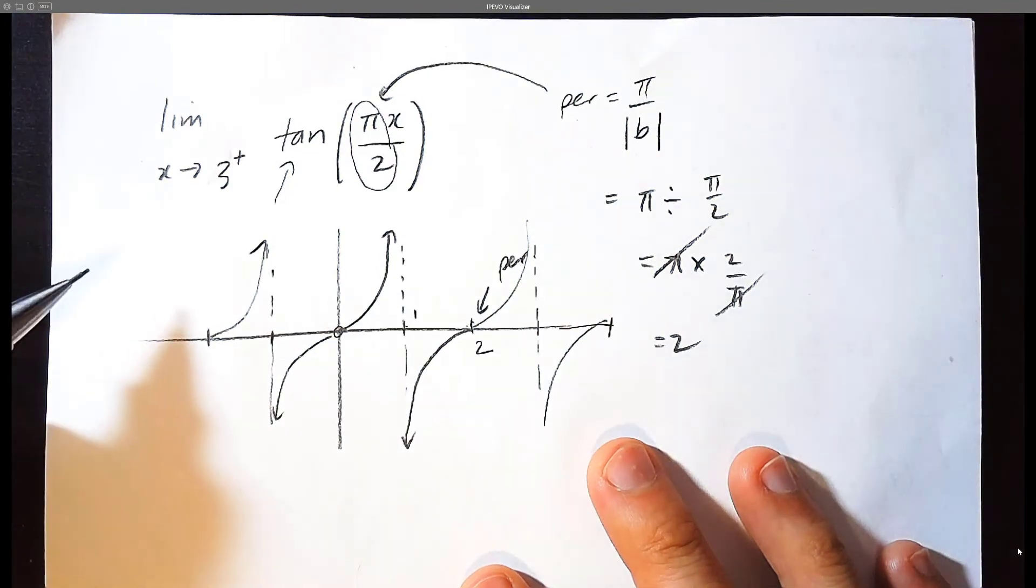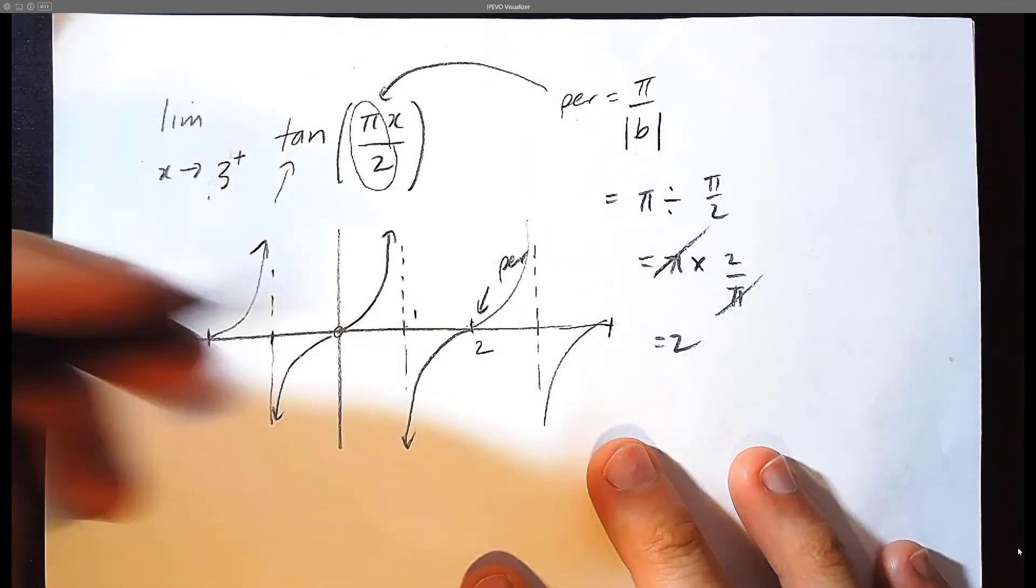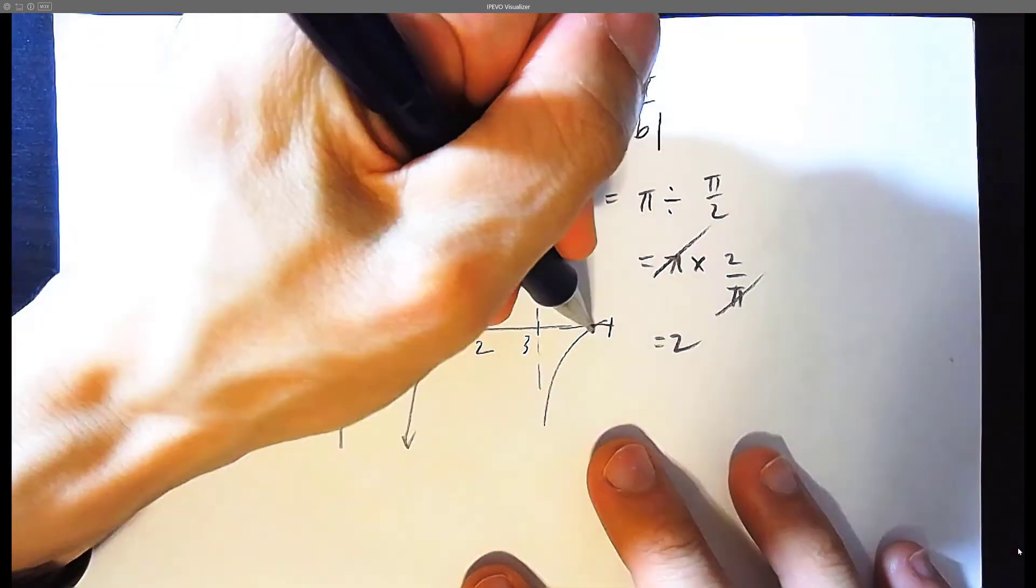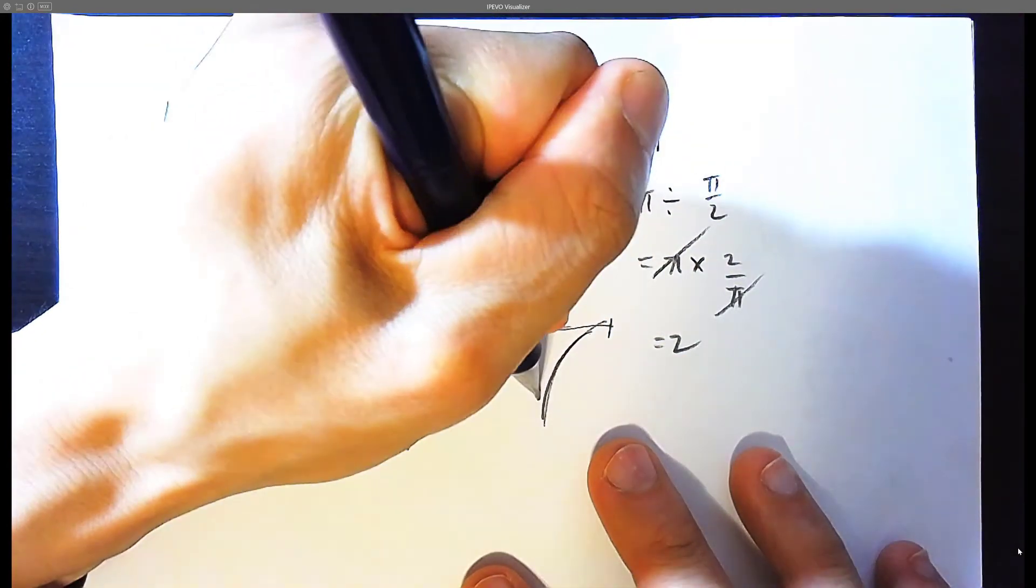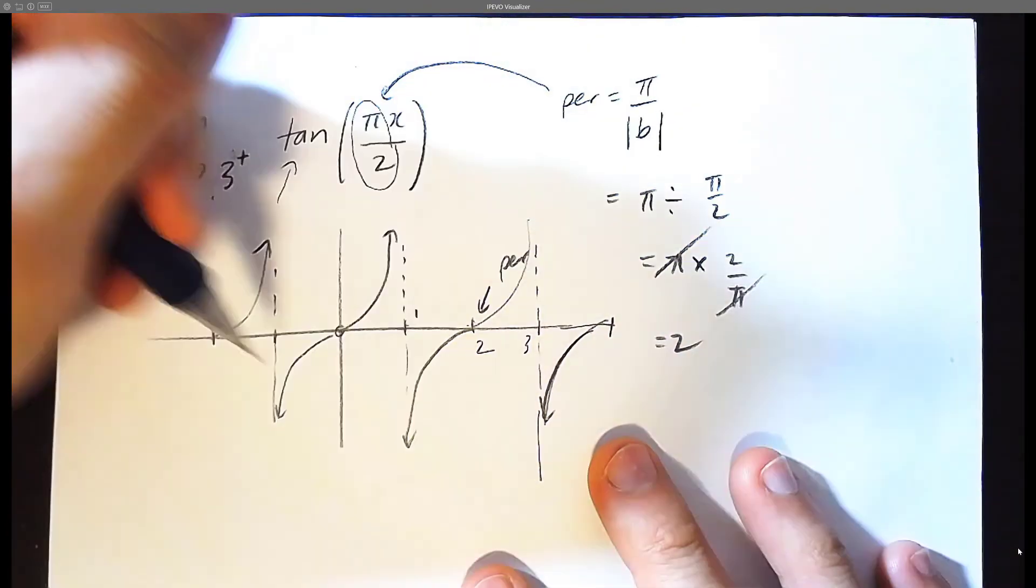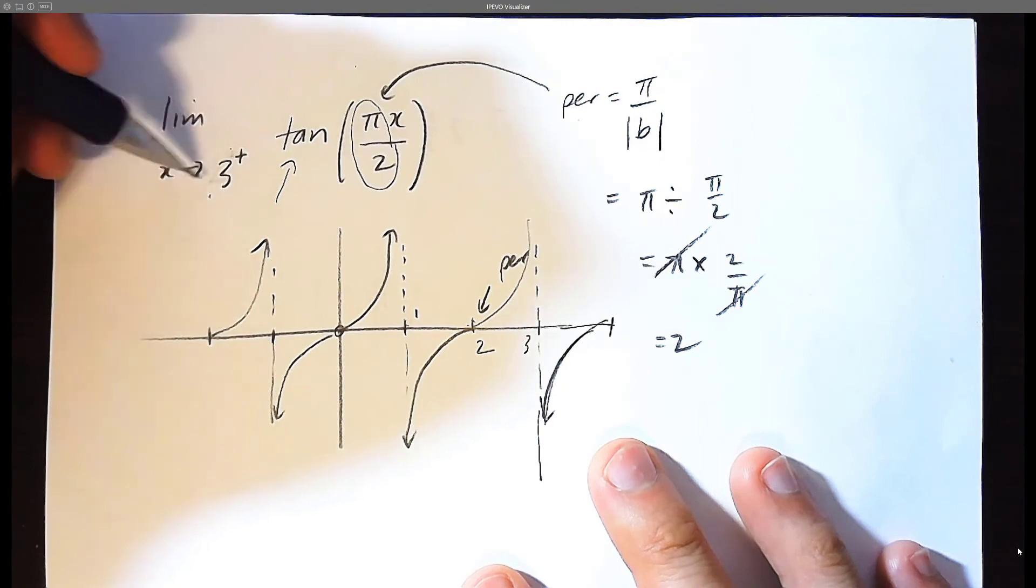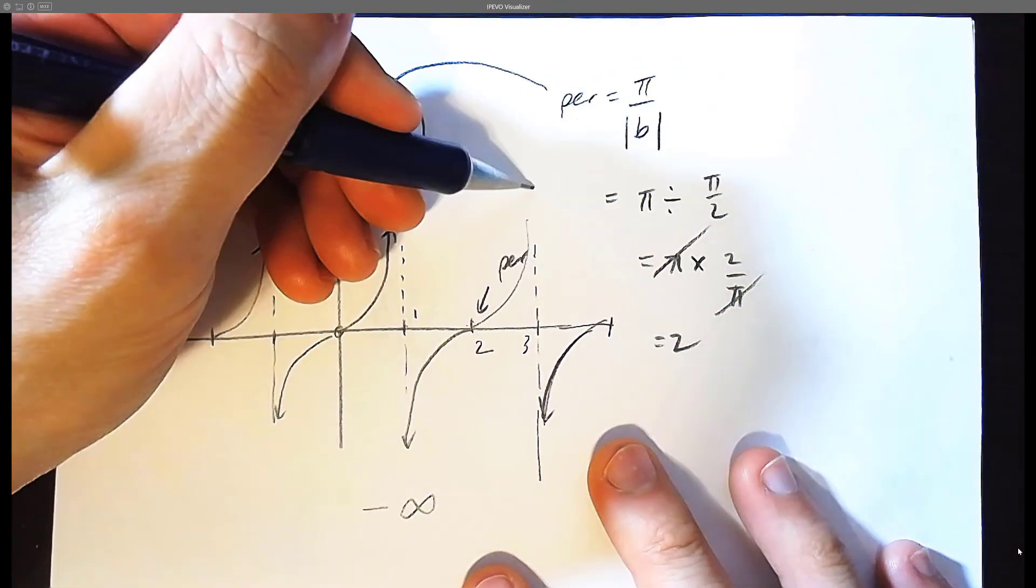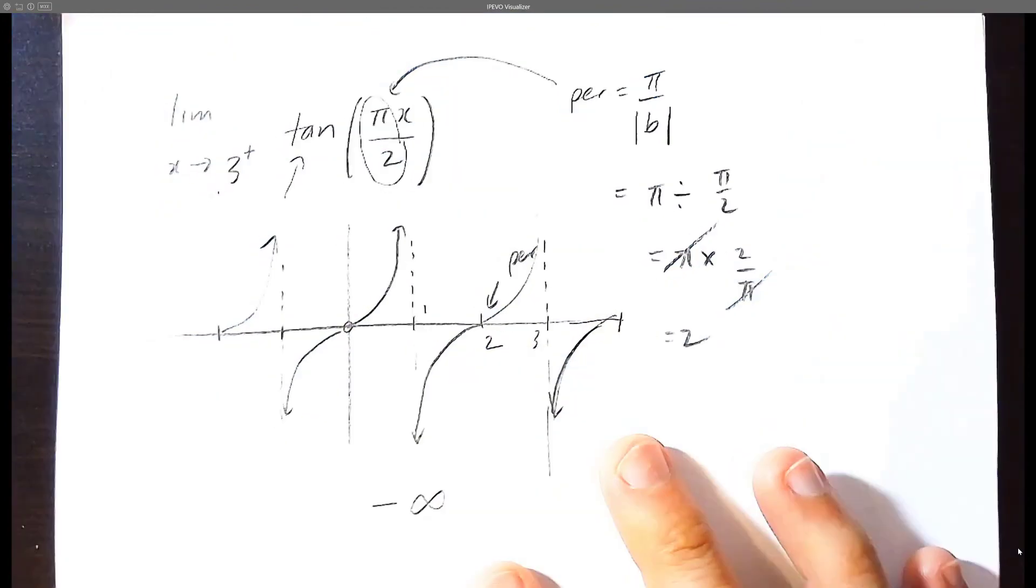But the question is saying, as you approach 3, the number 3 here, plus sign means from the right. So from the right is coming down this way, and you can see that we're approaching negative infinity. So the limit as x approaches 3 from the right is negative infinity. Not positive infinity, which is up, but it's going to be down, it's going to be negative infinity.